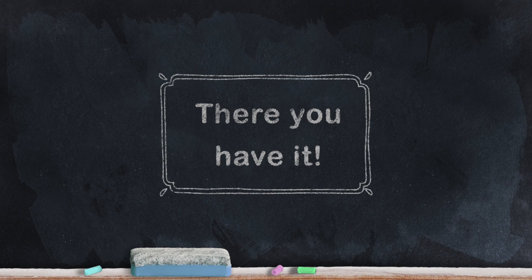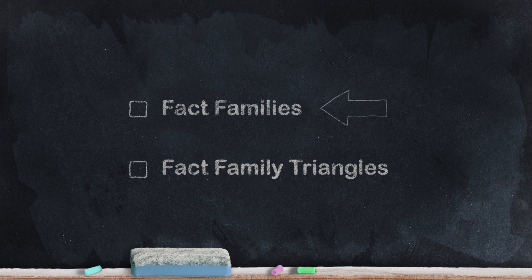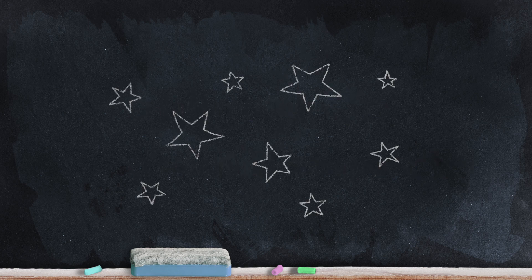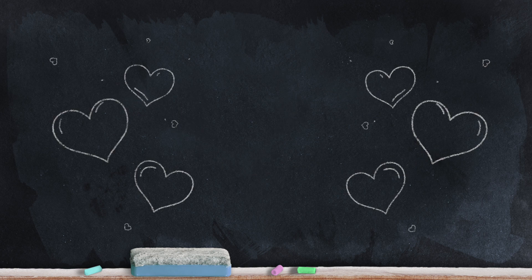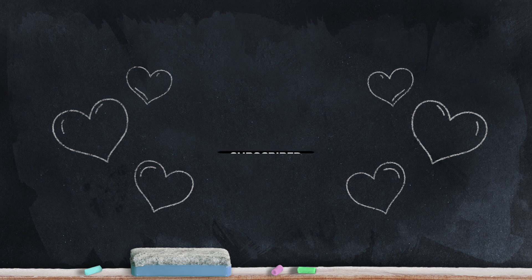Well, there you have it. Fact families can help us find addition and subtraction facts. And fact family triangles help us see how these fact family numbers are related. If you found the video helpful, please be sure and give it a like. If you'd like to see more, please subscribe. And if you think someone else might find it useful, please share.